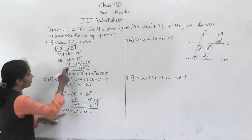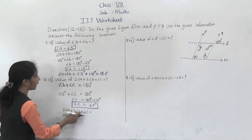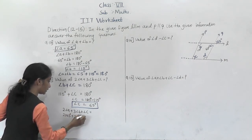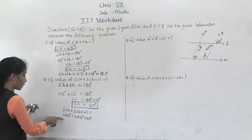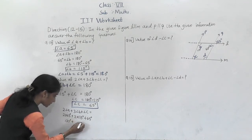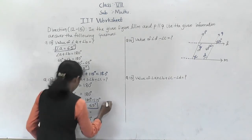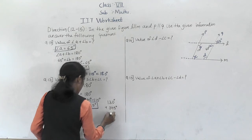Angle A is 65 degrees, so 2 into 65, plus 3 times angle B which is 3 into 115 degrees, plus angle C which is 65 degrees. Calculating: 2 times 65 is 130 degrees; 3 times 115 is 345 degrees; plus 65 degrees.